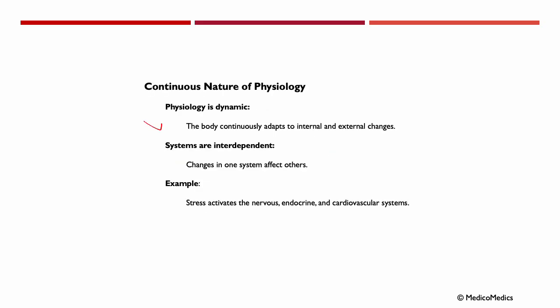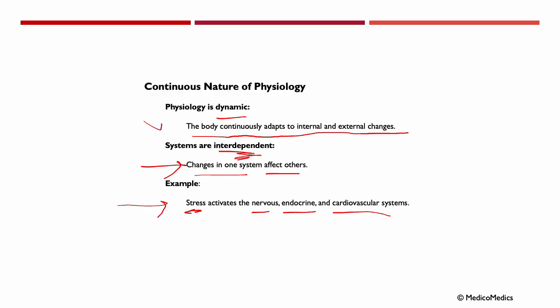Physiology is dynamic — the body continuously adapts to internal and external changes. Systems are interdependent, so changes in one system very often affect other systems. For example, stress activates the nervous system, the endocrine system, and the cardiovascular system.